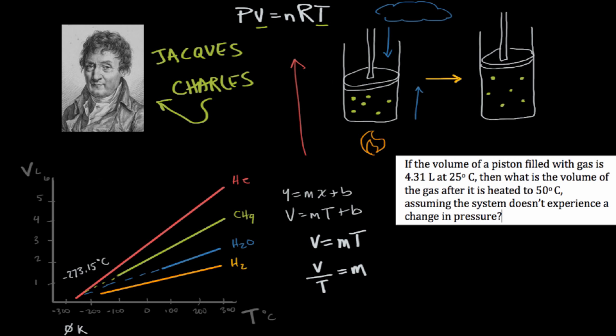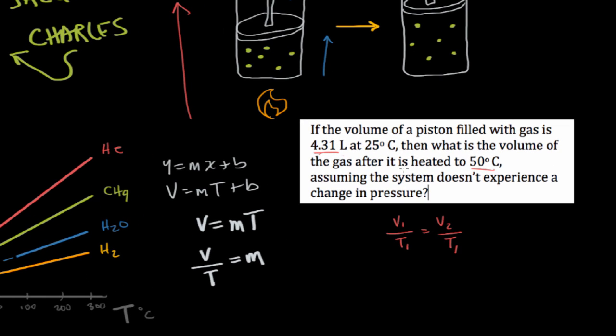Let's try to use this concept in a problem. If the volume of a piston filled with gas is 4.31 liters at 25 degrees Celsius, then what is the volume of the gas after it's heated to 50 degrees Celsius, assuming that the system doesn't experience a change in pressure? We're looking at a change in volume related to a change in temperature assuming constant pressure and constant moles. This is a perfect opportunity to apply Charles Law. We need to start with V1 over T1 is equal to V2 over T2. We're saying that the initial quotient of the volume and temperature is equal to the final quotient because volume divided by temperature is constant.